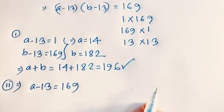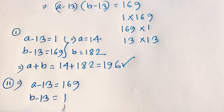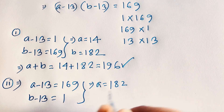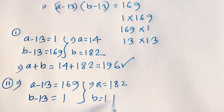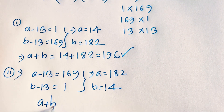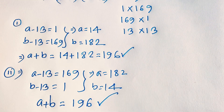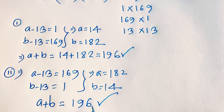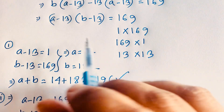Case 2: a minus 13 equals 169 and b minus 13 equals 1. Then a equals 182 and b equals 14. Adding both: a plus b equals 182 plus 14 equals 196. This is our answer for case 2.